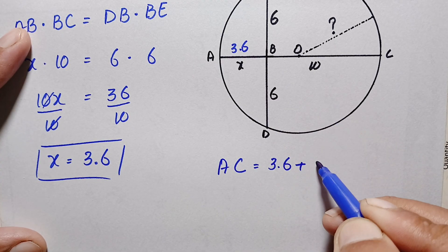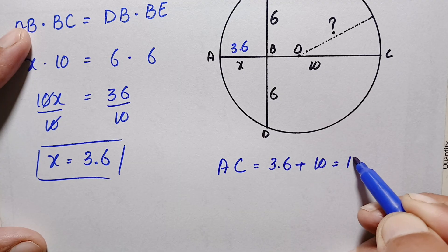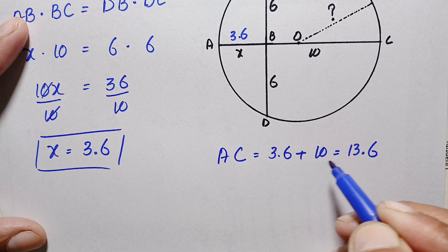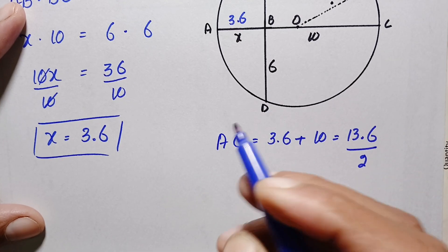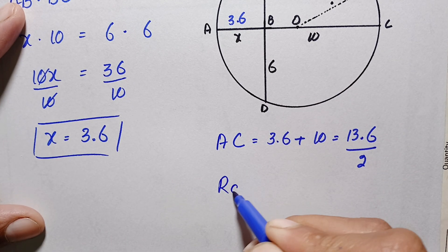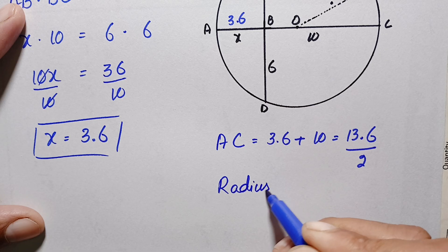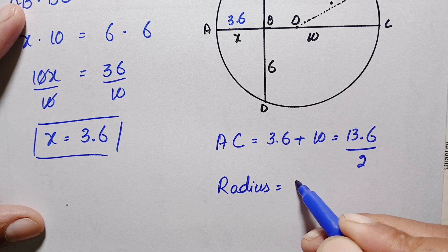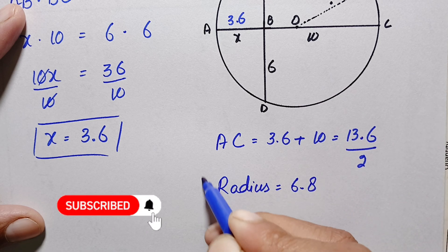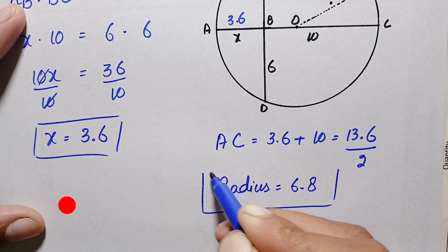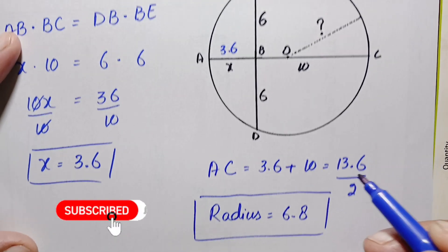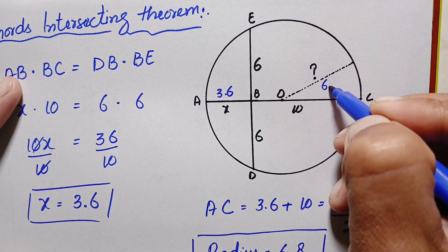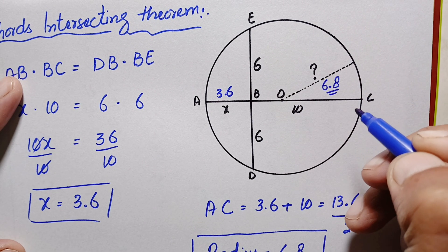Dividing the diameter by 2 gives us the radius of the circle. The radius equals 13.6 divided by 2, which is 6.8 units. That is our final answer — the radius of the circle is 6.8 units.